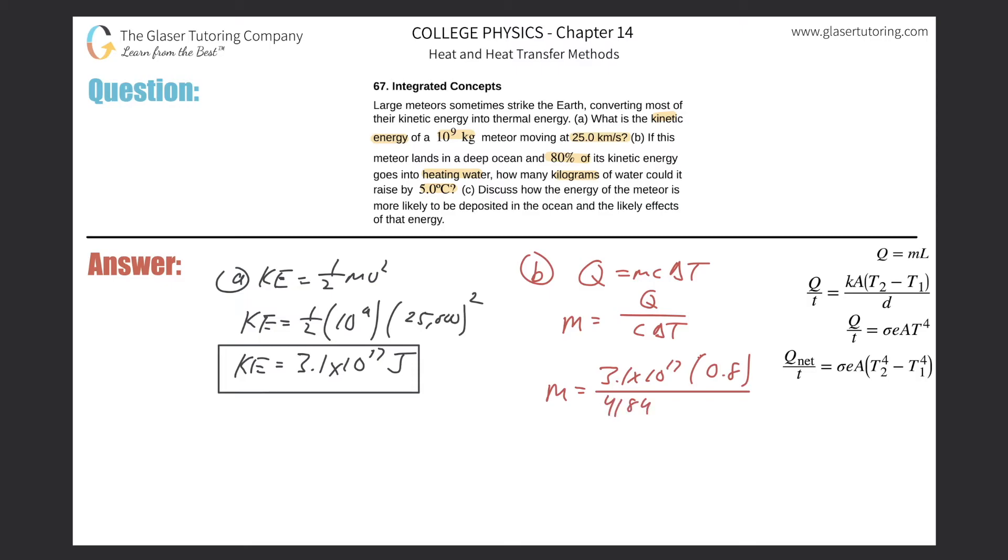Divided by the specific heat of water, which is around 4184 or 4186. That's what your book uses. And the change in temperature here would be 5 degrees Celsius. And let's see what we get. So we get that answer times 0.8. I'm using exact values here.